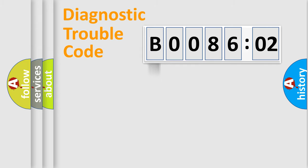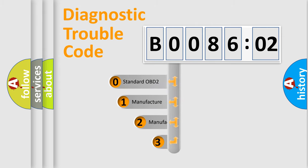Powertrain, body, chassis, network. This distribution is defined in the first character code.